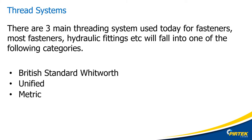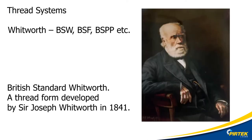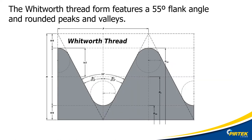Thread systems. There are three main systems in the world: British Standard Whitworth, Unified, and Metric. British Standard Whitworth is the oldest standardized threading system, developed by Sir Joseph Whitworth in 1841. It can be identified by its 55 degree flank angles and rounded peaks and valleys.